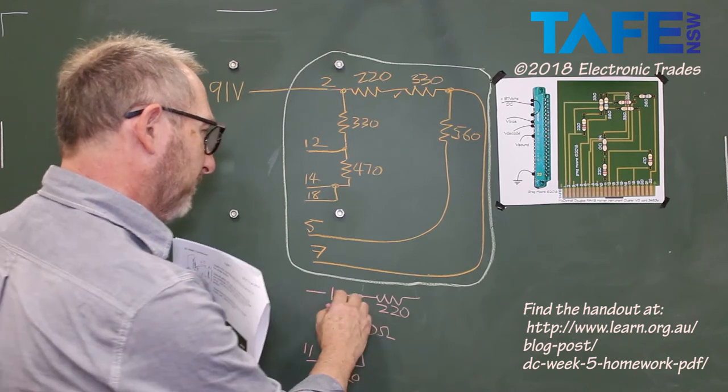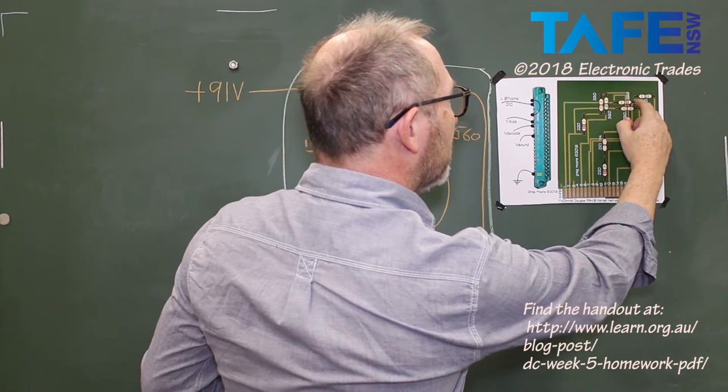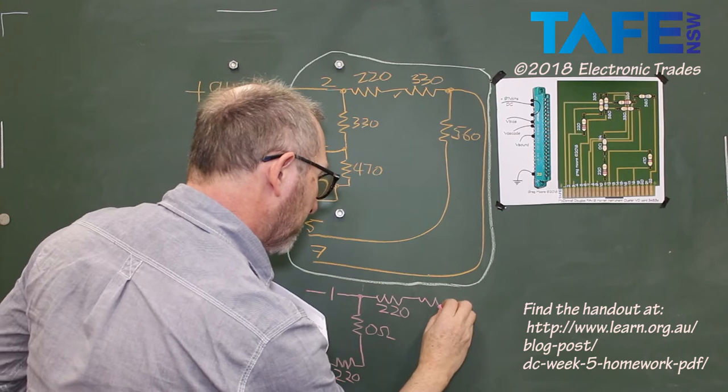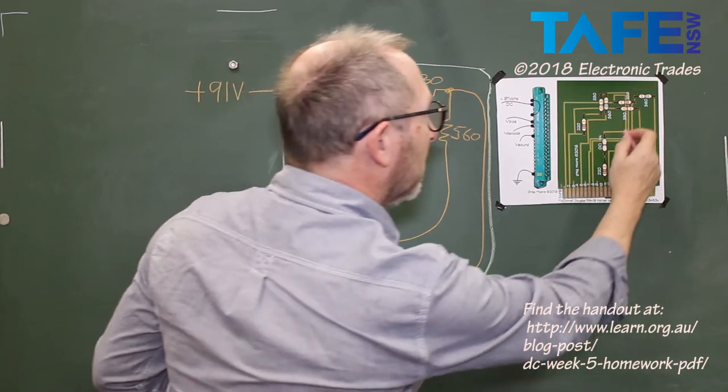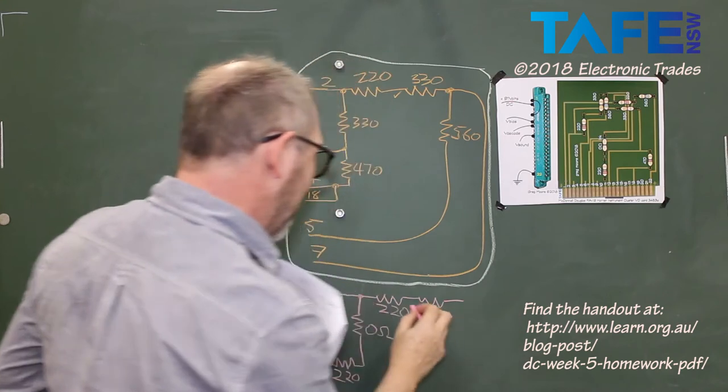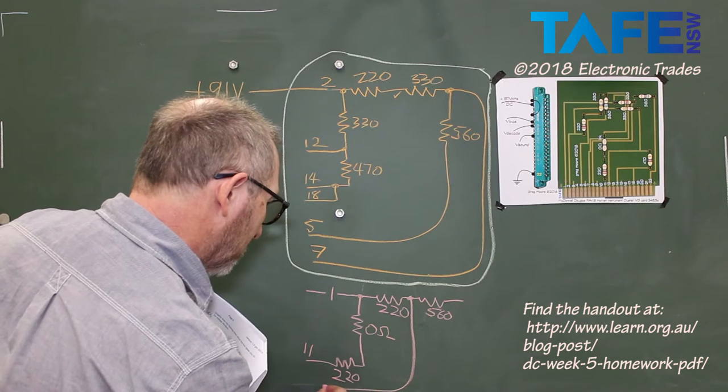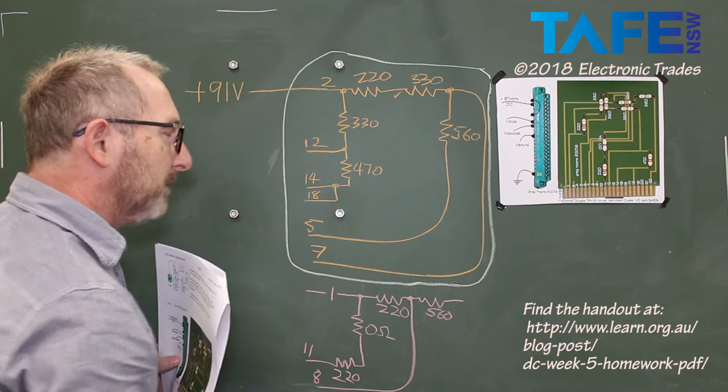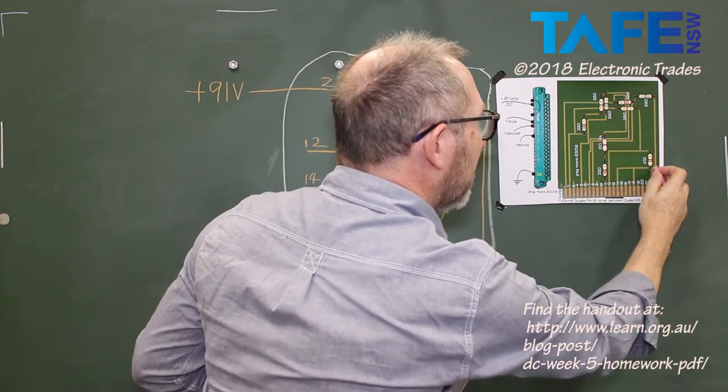220, pin 1 comes in, picks up the original 220 though. That original 220 comes across and joins up with a 560. At the junction where it meets that 560, it comes down and comes out of pin 8. Pin 8.